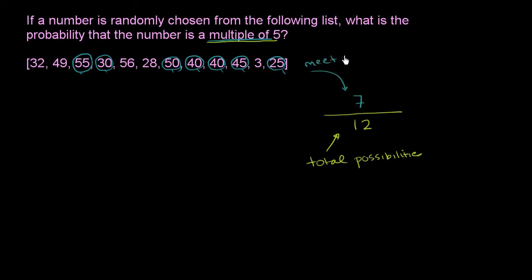So in this example, the probability of selecting a number that is a multiple of 5 is 7 twelfths.